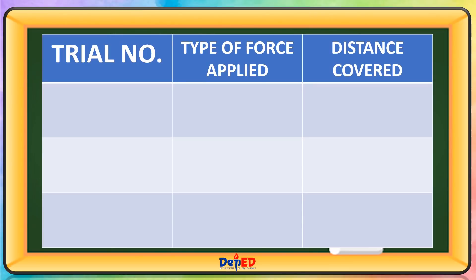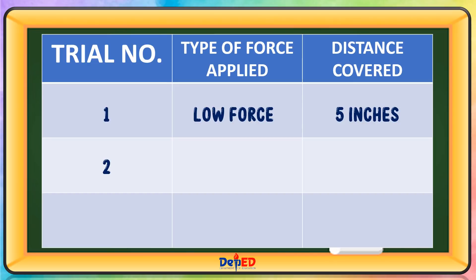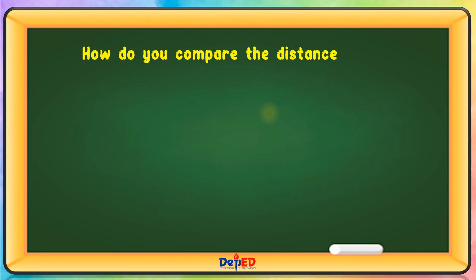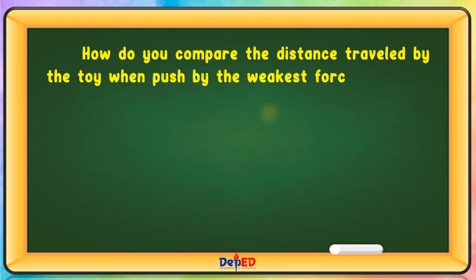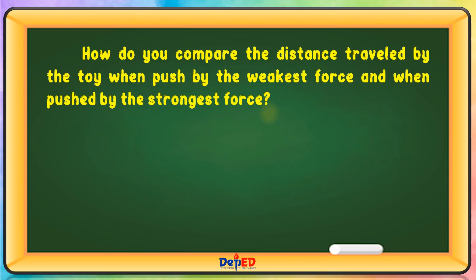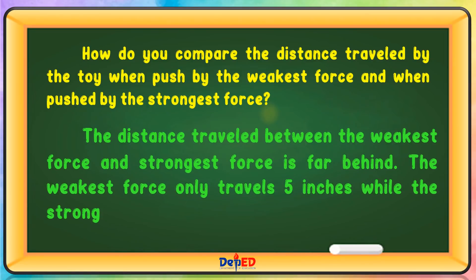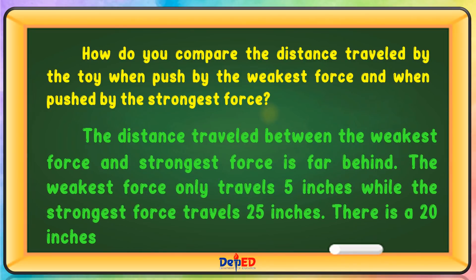Trial 1: Low force applied — distance covered: 5 inches. Trial 2: Medium force applied — distance covered: 11 inches. Trial 3: Full force applied — distance covered: 25 inches. The distance traveled between the weakest force and the strongest force is far apart — the weakest force travels 5 inches while the strongest travels 25 inches. There is a 20-inch difference.